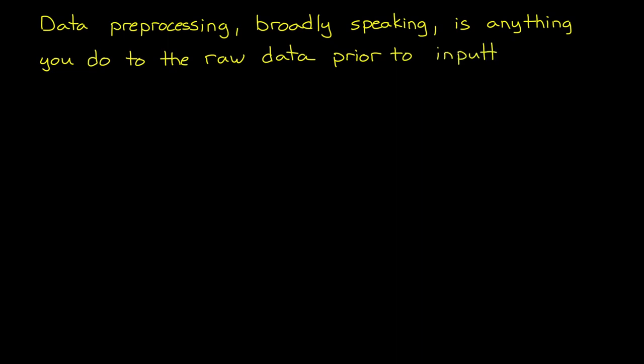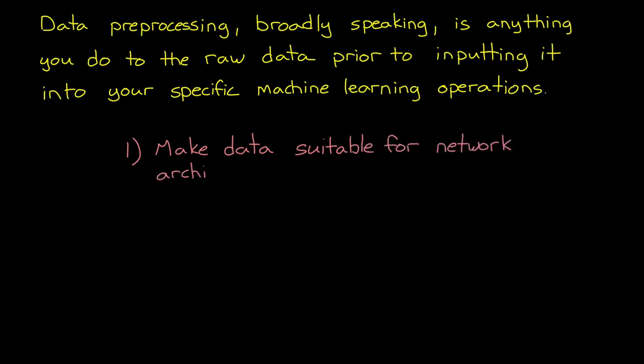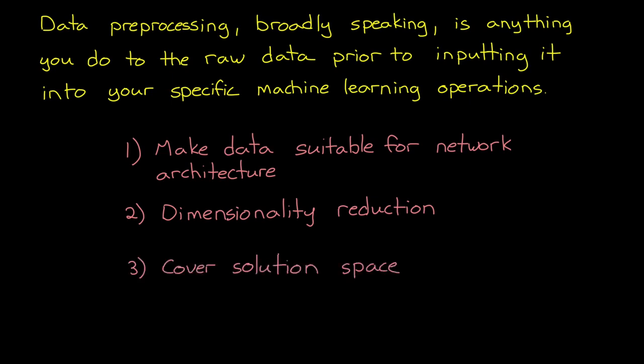Data preprocessing is a pretty broad term. It's basically anything you do to the raw data prior to inputting it into your specific machine learning operations. And it's hugely important, for at least three reasons. One, preprocessing can transform the data into a form that is suitable for the network architecture. Two, it can help reduce the dimensions of your data and make patterns more obvious. And three, it can adjust the training data to ensure the entire solution space is covered.